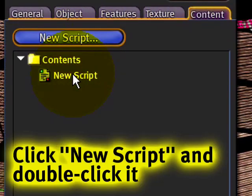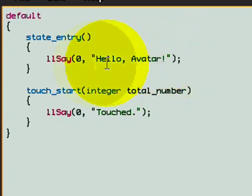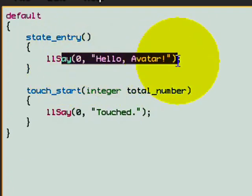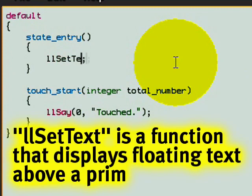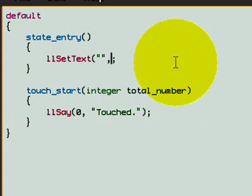And this is where I'll double click the new script and set up the parameters. Right here, instead of llSay, I'm going to select that and delete it and then replace it with llSetText with the parameters. And here they are. I'll explain what each one of them does.